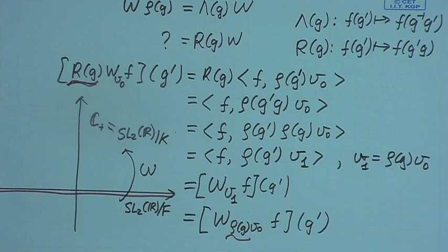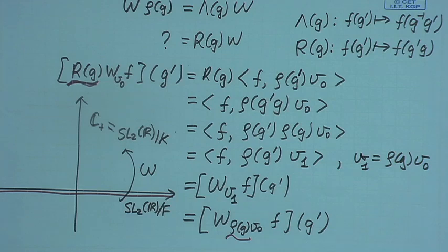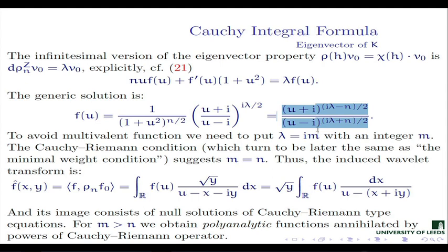Our function is initially defined on the real line, which in our language turns out to be the homogeneous space SL(2,R)/F. We started from this representation on the real line. The wavelet transform — since we chose the mother wavelet to be an eigenfunction of subgroup K — transforms a function to a function on the homogeneous space SL(2,R)/K, which is complex numbers with positive imaginary part, i.e., the upper half-plane.